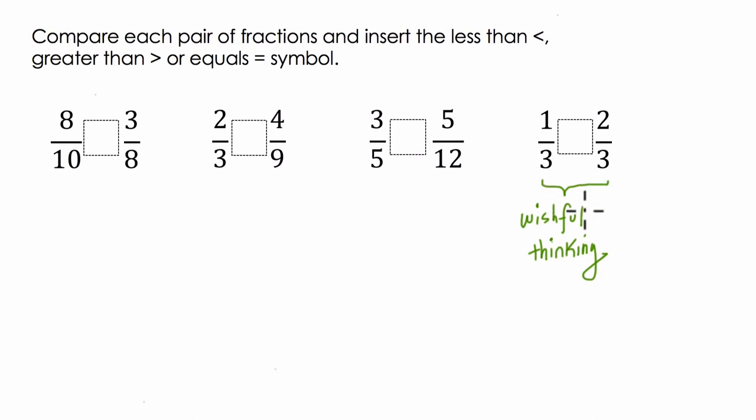In this case, since it's already set up, this is a nice example of what wishful thinking is going for, which is equal denominators or equal numerators. In this case, two-thirds is bigger than one-third, and that's easier to compare because we're dealing with thirds.